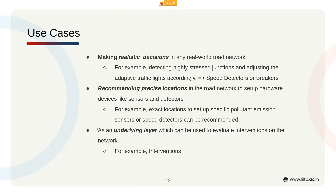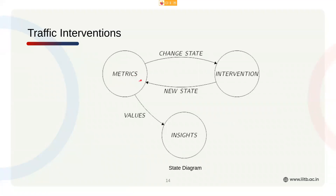That is the crux of our presentation — our code as an underlying layer, which is why we've also open-sourced it. An intervention works like this: we have metrics such as speed camera placement, stress, or total emissions. If we change the state by performing an intervention, this gives us a new state, and running our metrics on it gives new values from which we can derive insights — for example, whether it has been beneficial for the network or increased network fairness.